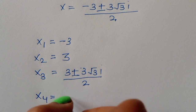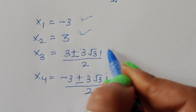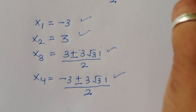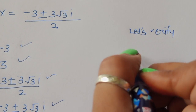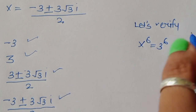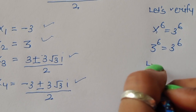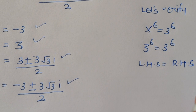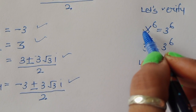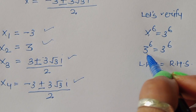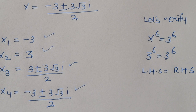We can verify these values. For x₂ = 3: 3⁶ = 3⁶, so LHS = RHS. For x₁ = -3: (-3)⁶ = 3⁶, which is positive, so LHS = RHS as well. All values are correct for this equation. Thank you.